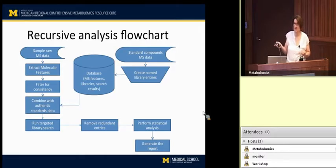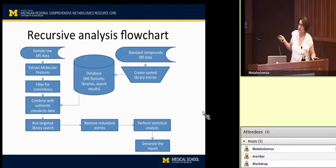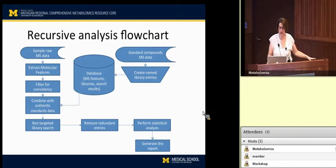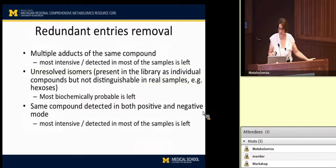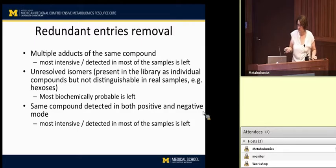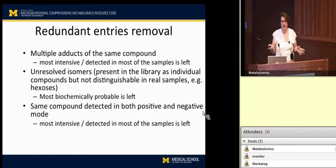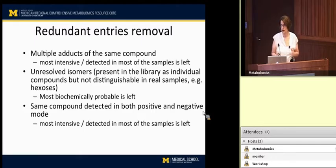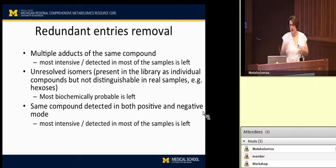At this point we have molecular formulas assigned to some peaks and names assigned to others. We want to remove any redundant entries that appear in the samples — where the same data is being reported twice. This can happen because our original library, created on neat standards, may contain isobaric compounds that are very close in retention time. When you run a neat standard you may see those as distinct peaks, but under the matrix of your sample they may no longer be distinct.